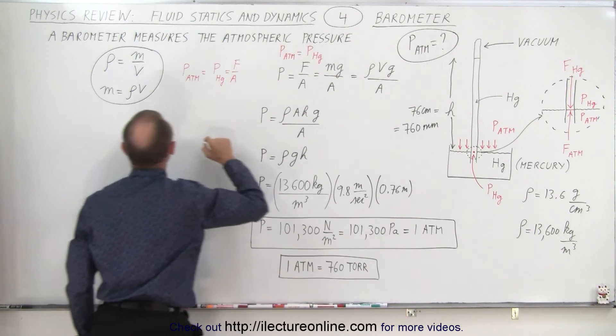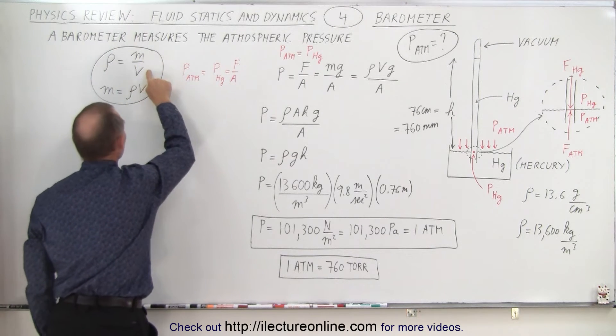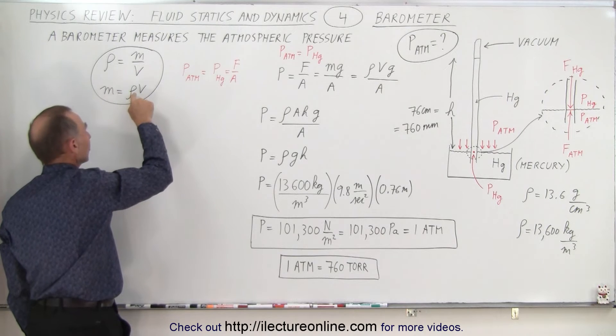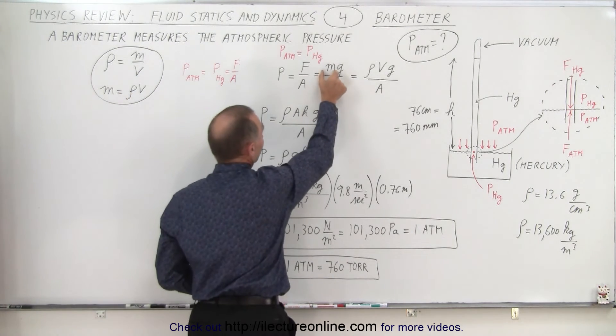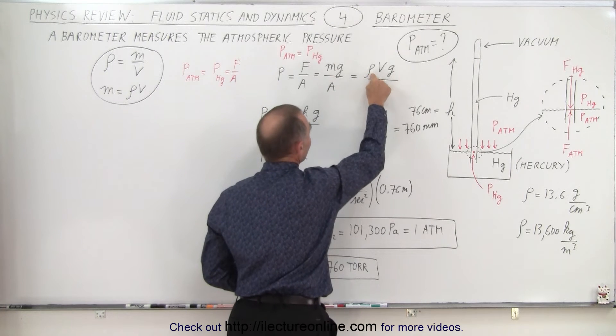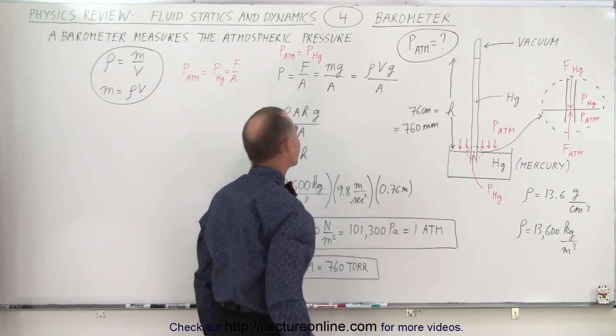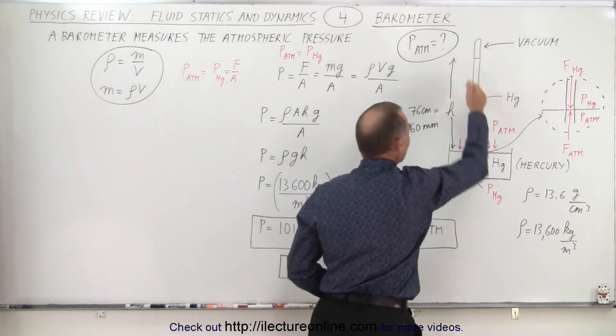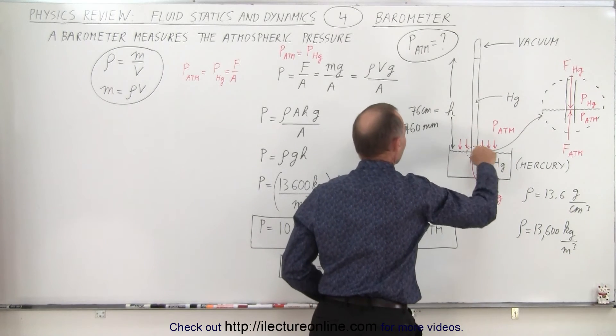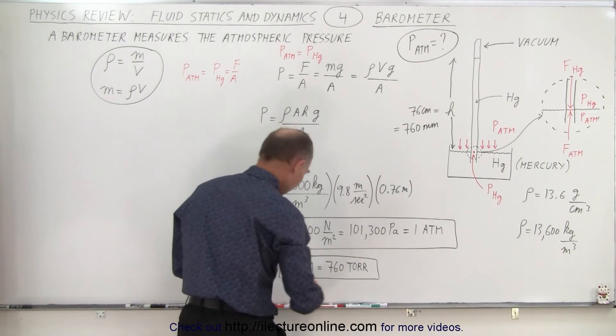And the weight can be defined as, notice here we have an equation for density. Density is mass over volume. So the mass can be expressed in terms of the density times the volume. So in this case, we're going to replace the mass of the mercury by the density of the mercury and the volume of the mercury inside the tube, times g divided by A. Now of course, the volume of the tube, of the mercury inside the tube, will be the height times the cross-sectional area, which is what we have over here. Then you can see that the areas cancel out.